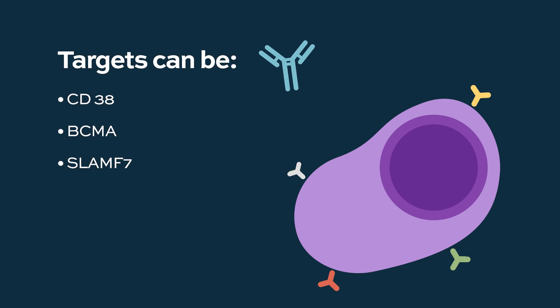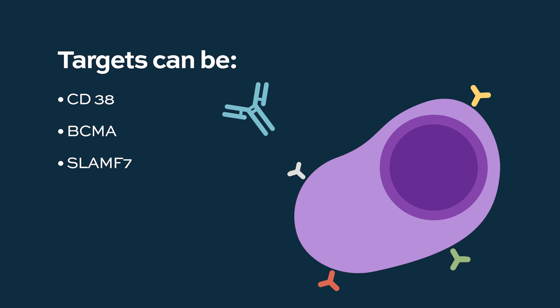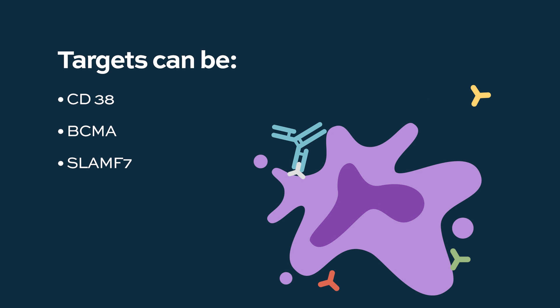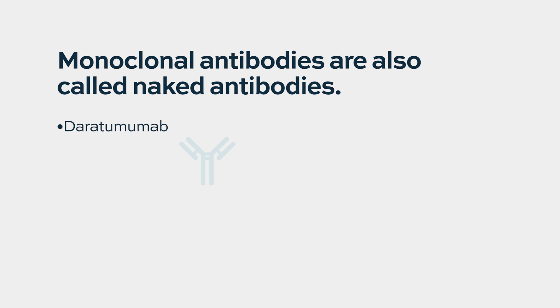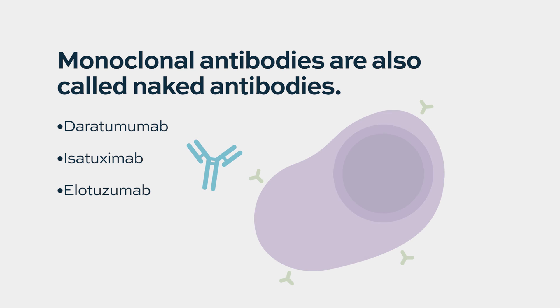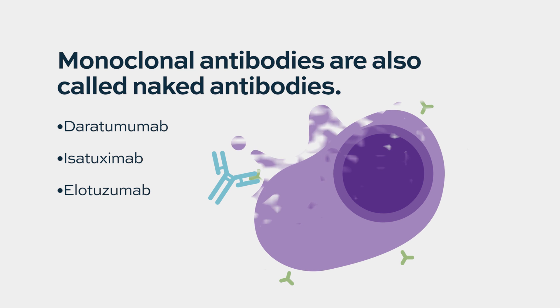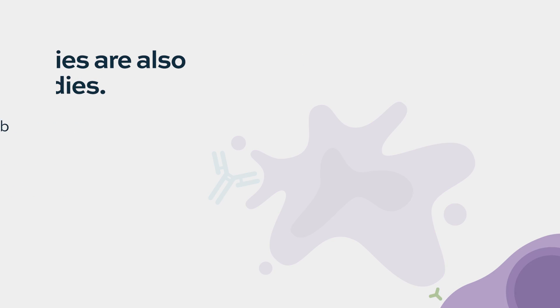The principle of a monoclonal antibody is that it has a receptor and recognizes its target. Myeloma cells express certain proteins on the surface — CD38, BCMA, or SLAMF7 — and the monoclonal antibody finds the target with its receptor and, after binding, destroys the myeloma cell. Naked antibodies such as daratumumab, isatoximab, or elotuzumab bind to the target and directly destroy the myeloma cells.